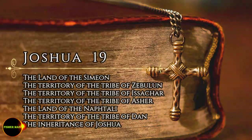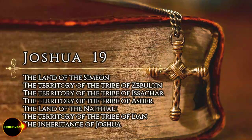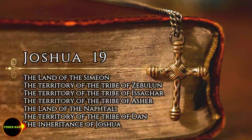The sixth lot came out for Naphtali, clan by clan. Their boundary went from Heliph and the large tree in Zainanim, passing Adami-Nikib and Jabnel to Lakim, and ending at the Jordan. The boundary ran west through Asnath-Tabor, and came out at Hukak. It touched Zebulun on the south, Asher on the west, and the Jordan on the east.